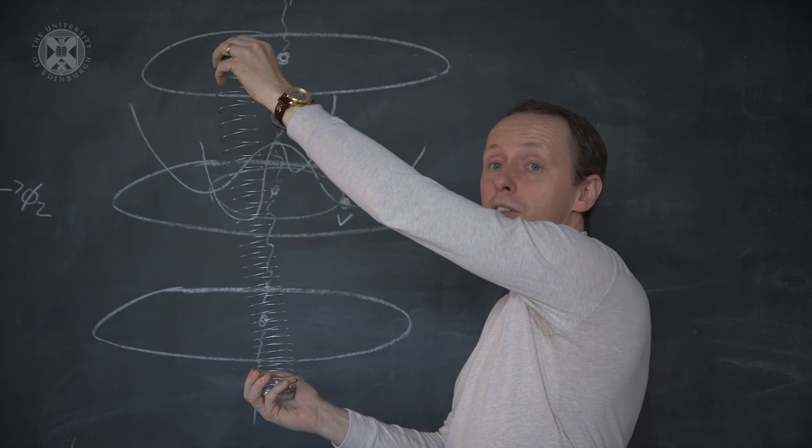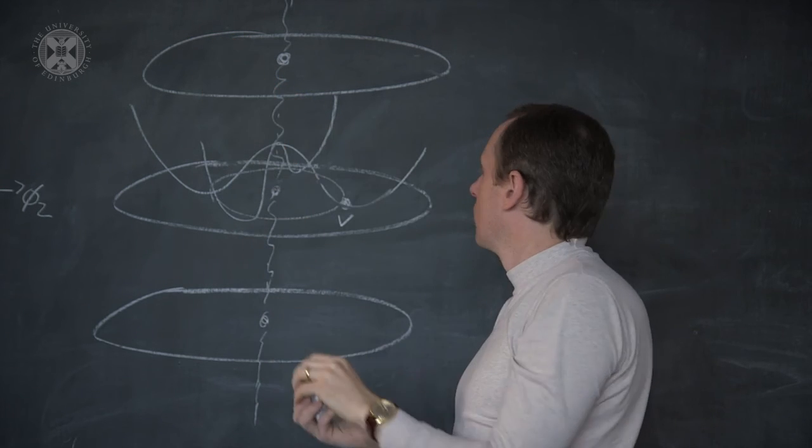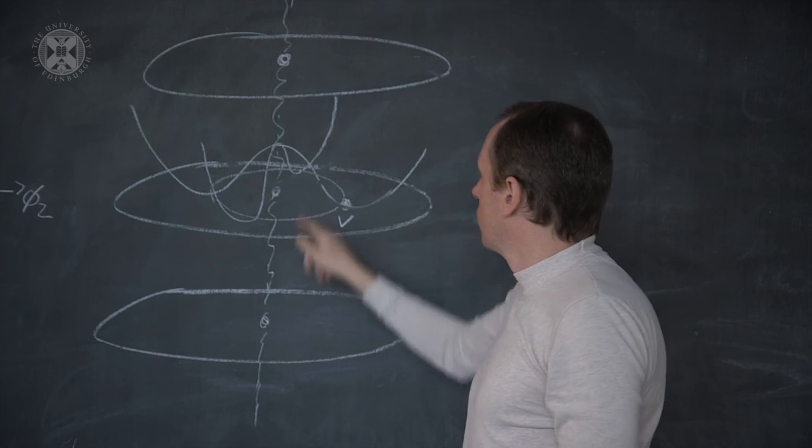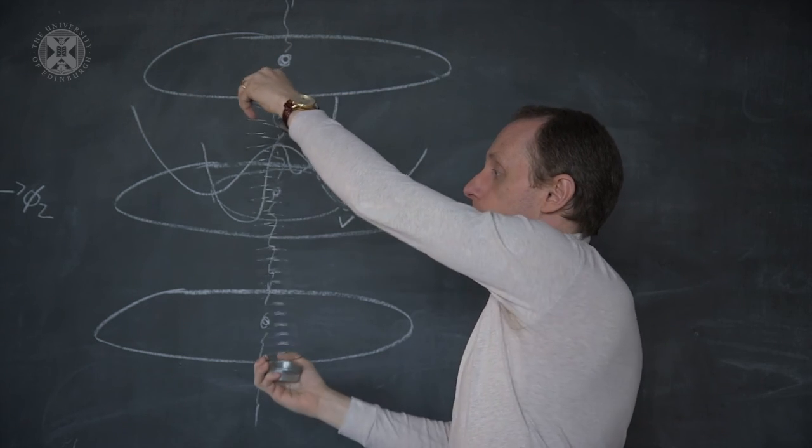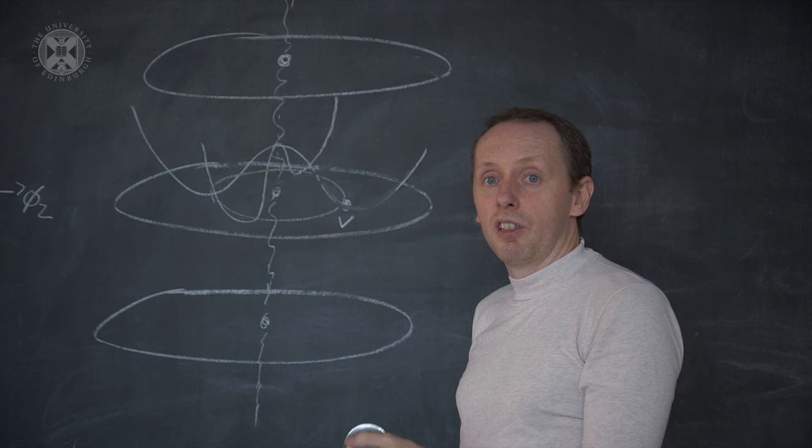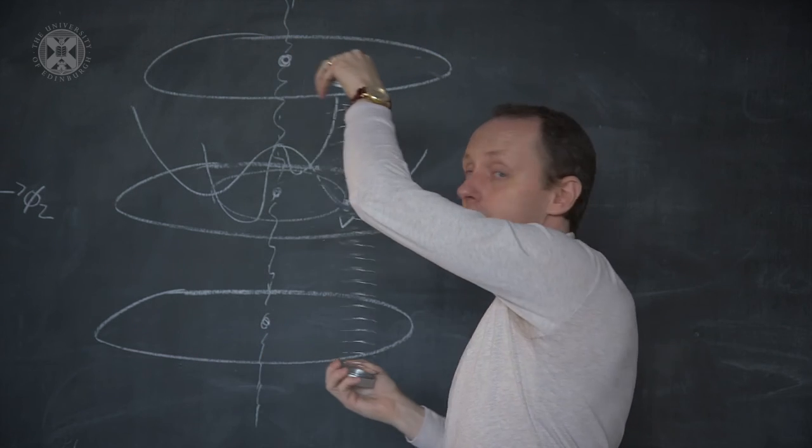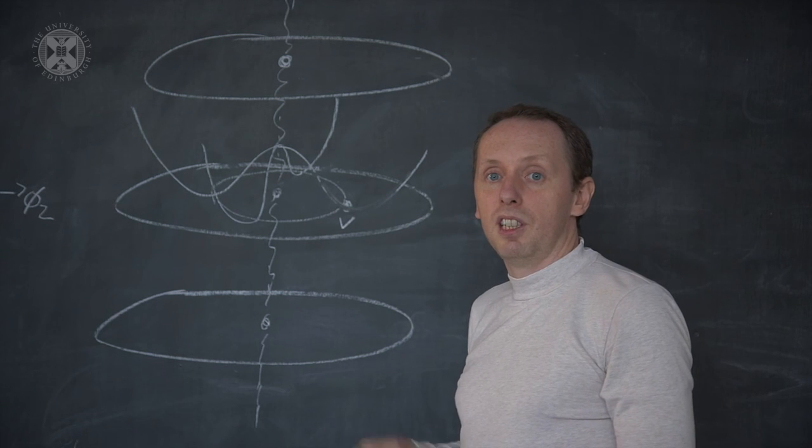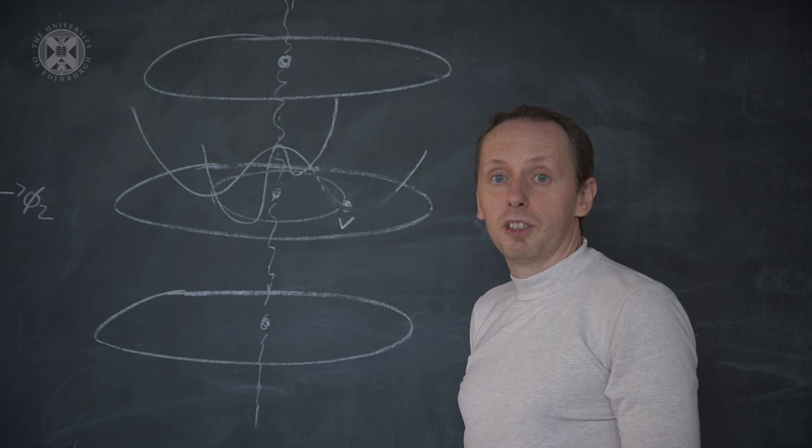If we align the slinky with this vacuum expectation value, we can analyze how its fluctuations around this behave. Fluctuations in the radial direction receive a restoring force from this potential. Fluctuations along the minimum do not. If we again think of the infinite wavelength zero momentum mode, we will see that displacements in the radial direction continue to oscillate, receiving a restoring force from this potential. These are massive modes. The mass is determined by the curvature of this potential at the minimum.